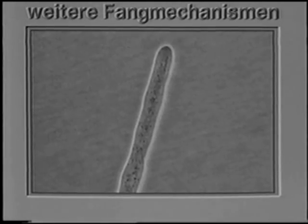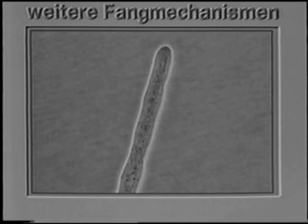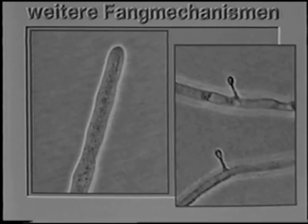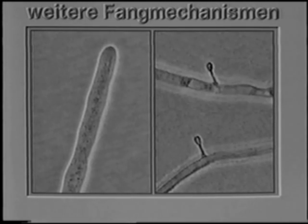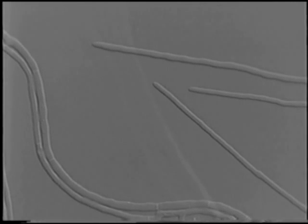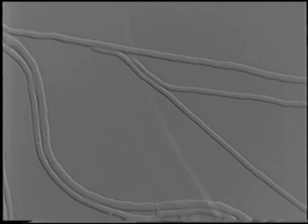Some fungi possess other capture mechanisms. Verticillium chlamydosporium infects nematode eggs by using its hyphal tips. Pleurotus ostreatus produces droplets on its hyphae which are highly toxic to nematodes. This group of fungi do not form special infection structures with which to attack nematodes, but use their hyphal tips.